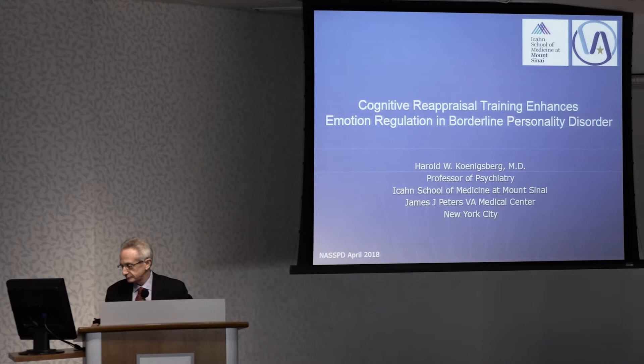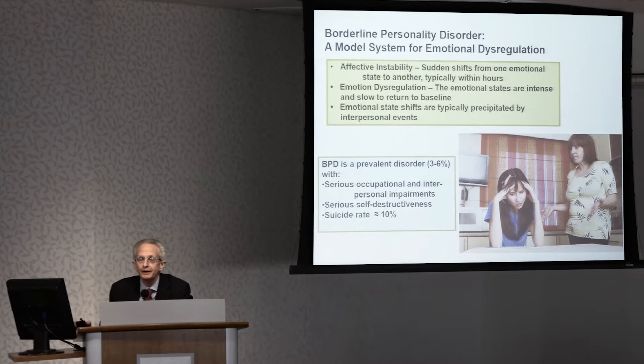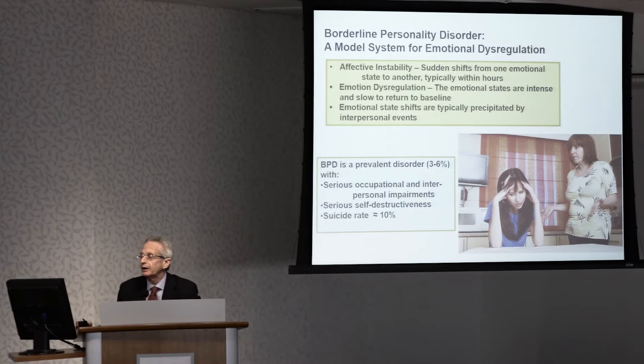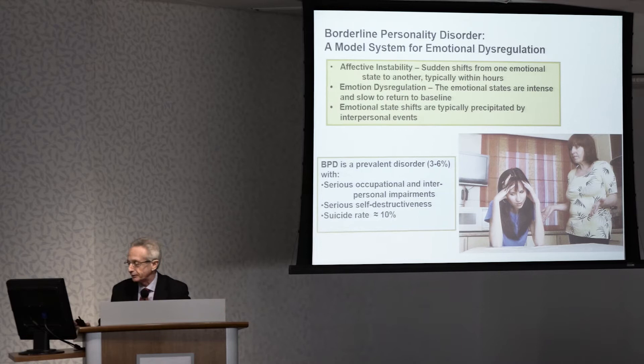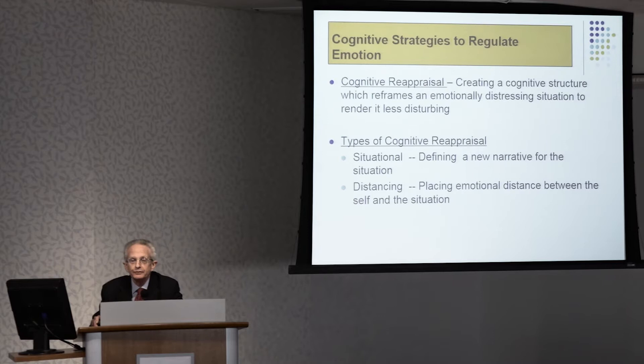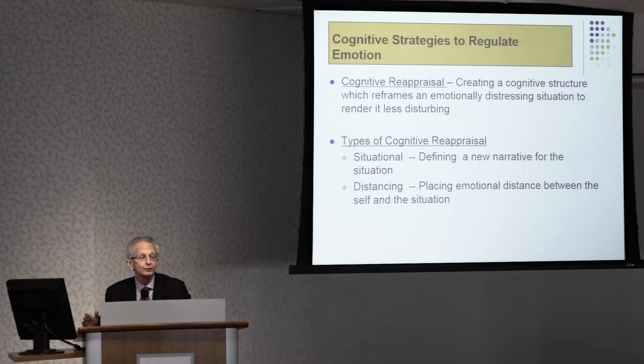As everyone in this room knows, borderline personality disorder is really characterized by affective instability as a major feature of the disorder — sudden shifts of mood from one state to another happening over a period of hours, often in response to psychosocial events, and emotional shifts that are quite extreme and then take a long time to get back to baseline. We wanted to study and understand more about this emotional affective instability in borderline patients, and one of the things we decided to look at is the processes that people normally use to regulate their emotions, with the hypothesis that maybe borderline patients were not able to use these processes as effectively.